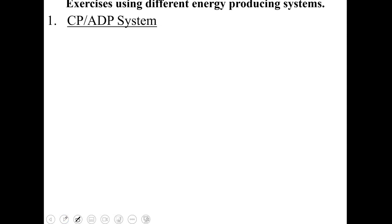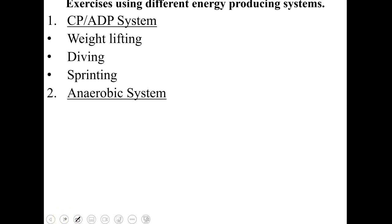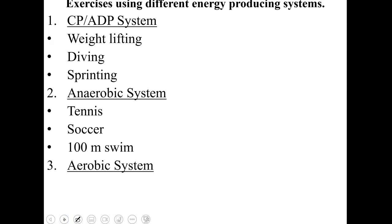Different exercises use different energy-producing systems. The creatine phosphate-ADP system is used for things like weightlifting, diving, and sprinting. The anaerobic system is used for things like tennis, soccer, and a 100-meter swim.